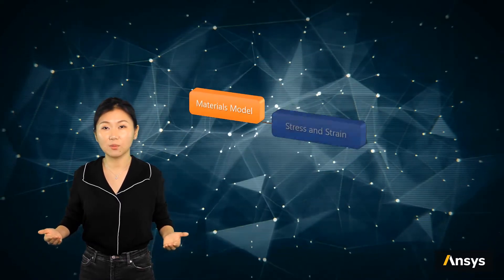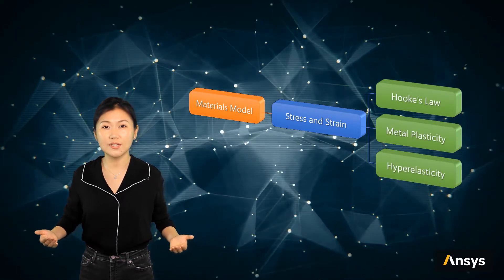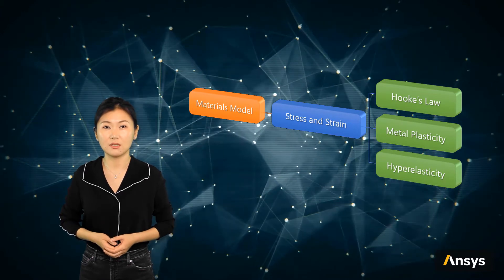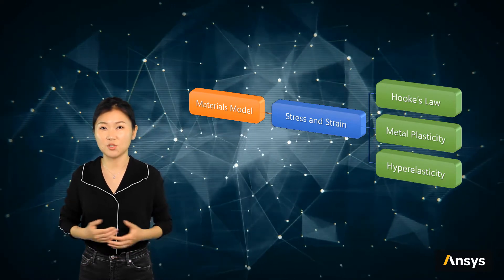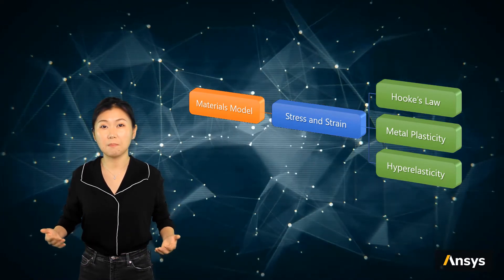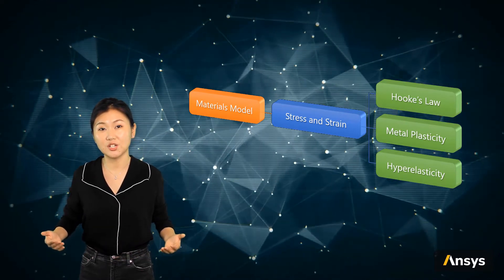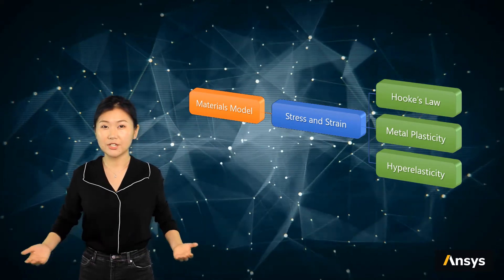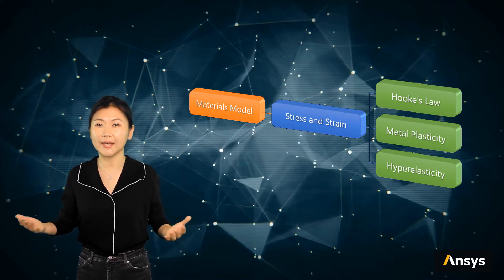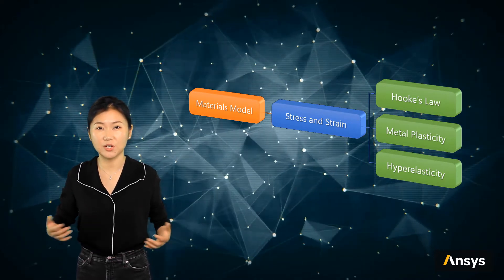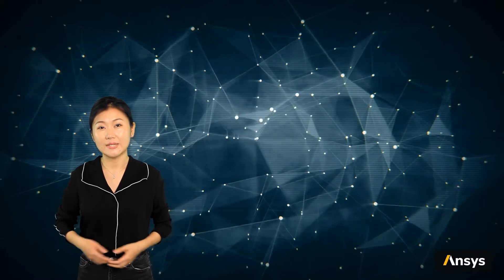The idea that force and deformation are related is intuitive. We have strain to describe the deformation and stress to describe the internal force. However, the relationship between stress and strain is missing. Different materials have different stress-strain relationships, and we call such a relationship a materials model. It is a mathematical relationship between material deformation and internal force. The relationship can be assumed as simple as a straight line, or it can be a complex mathematical expression. Discussion of materials model will appear in the following courses.